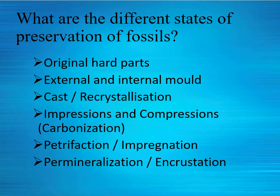A fossil can be preserved in one of six ways: first, original hard parts — where organisms with hard parts remain preserved as-is with no change; second, external and internal mold; third, cast or crystallization; fourth, impression and compression; fifth, petrification or impregnation; and sixth, permineralization or incrustation. Now let us go into the detail of these different preservation states one by one.